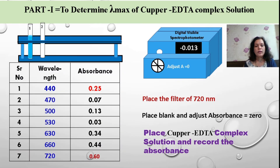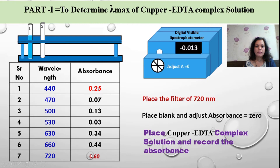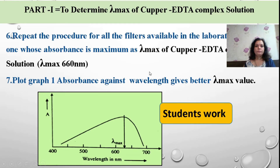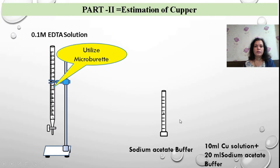Look at the readings given with the wavelength and absorbance values, and pick the maximum absorbing wavelength for this complex. The maximum absorbing wavelength is 720 nanometers, so you can choose this filter for estimating copper present in a given solution. After completing this part, plot a graph of absorbance versus wavelength, which will give you the maximum absorbing wavelength as lambda max. This graph plotting can be completed as a student task.